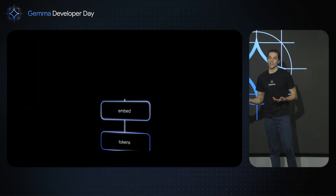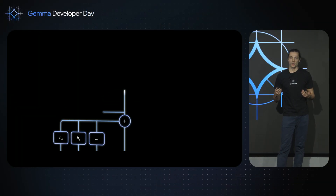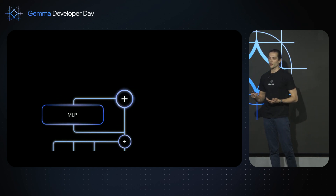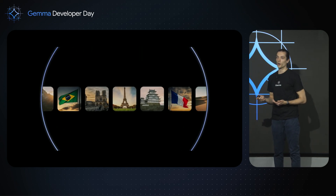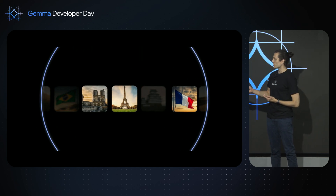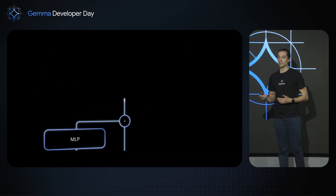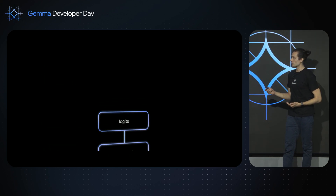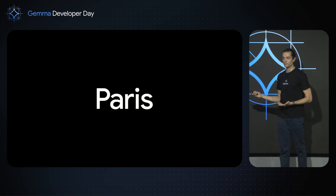We start with some text inputs to Gemma, like 'Where is the city of light?' This gets processed by the model into an intermediate representation. We can then apply our sparse autoencoder on that representation and can see that French-related concepts show up. These are then used by the language model to predict the correct output: Paris.